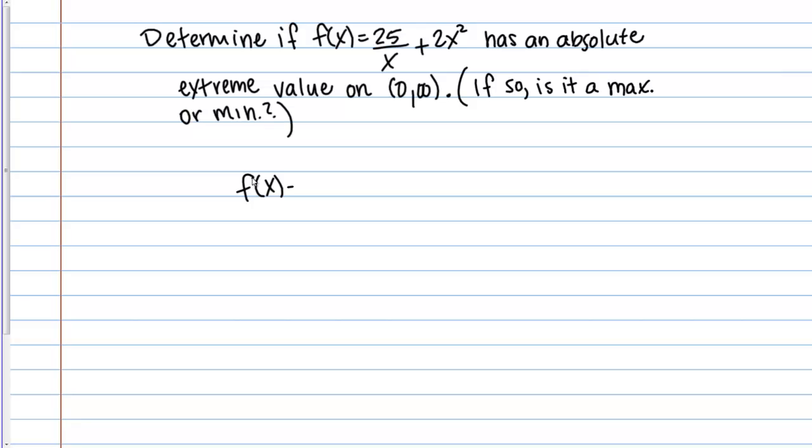So our function is 25/x + 2x² and our interval is from 0 to infinity. Well, this function, the only place it's not continuous is at 0, right? Because 0 would give me a 0 in the denominator, but 0 is not included in our interval. So this function is continuous on the interval from 0 to infinity, the open interval from 0 to infinity. So that means we can use this theorem.